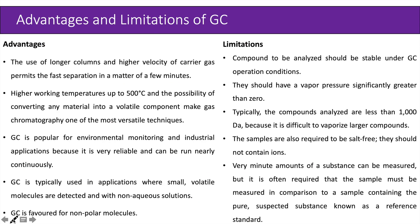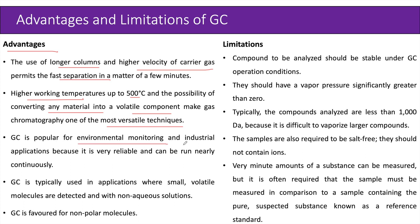Advantages of gas chromatography include the use of longer columns and higher velocity carrier gas permitting fast separation in a matter of minutes. Higher working temperatures up to 500 degrees Celsius and the possibility of converting any material into volatile components make GC one of the most versatile techniques. It is popular for environmental monitoring and industrial applications because it is very reliable and can be run nearly continuously. It is typically used for small volatile molecules with non-aqueous solutions and is favored for non-polar molecules.